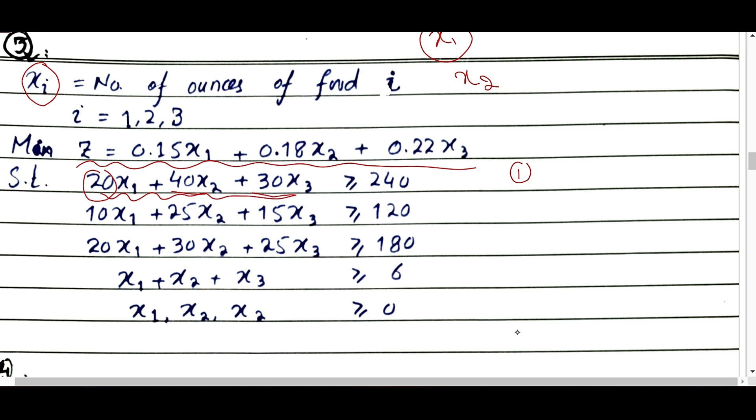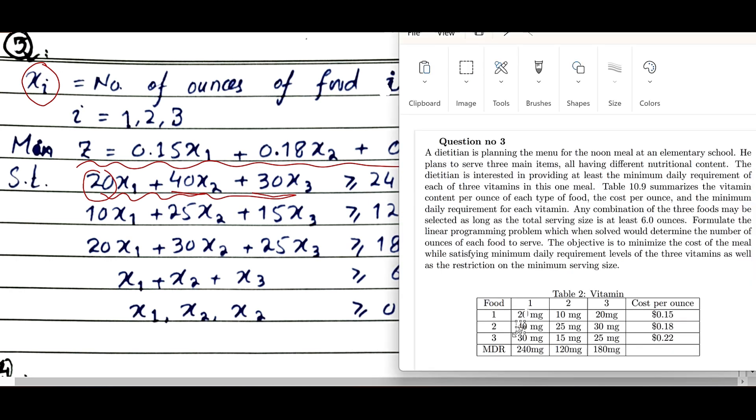Similarly, for the second vitamin, it contains 10 in x1, 25 in the second food, and 15 in the third food. So 10x1 + 25x2 + 15x3.